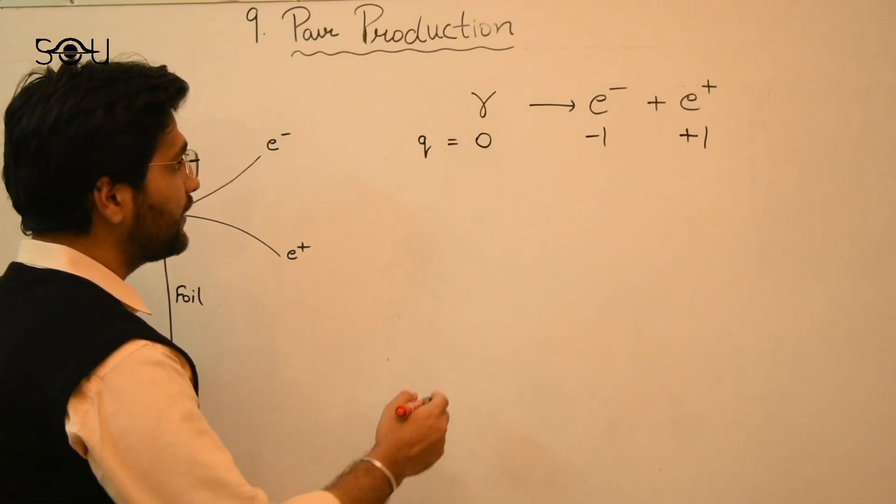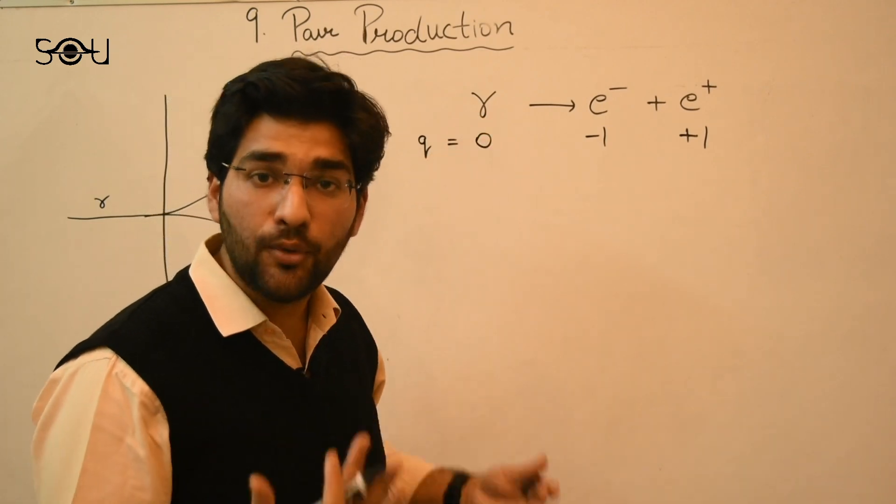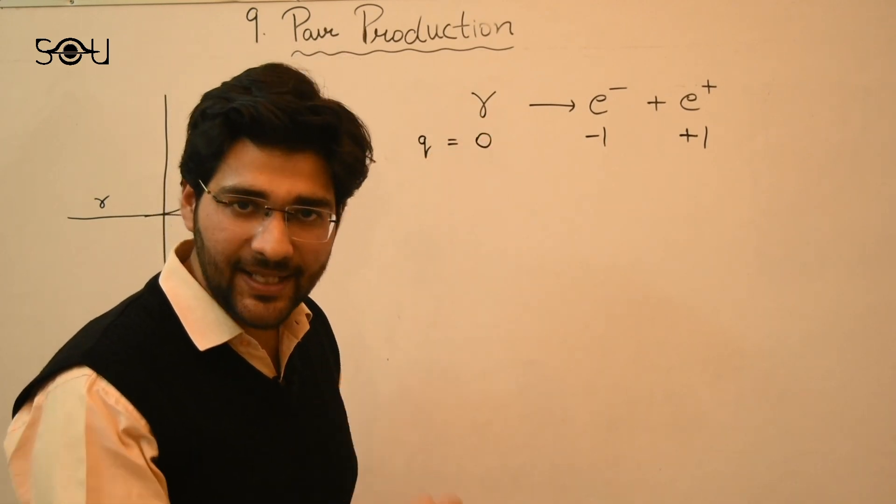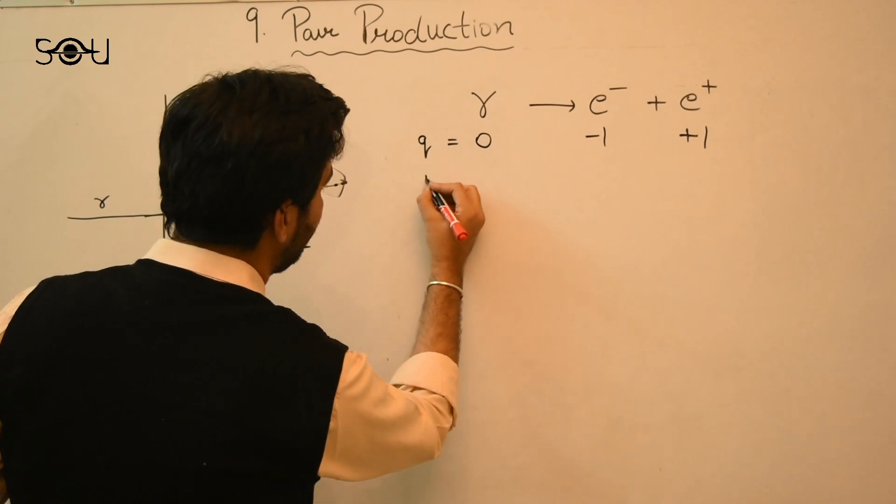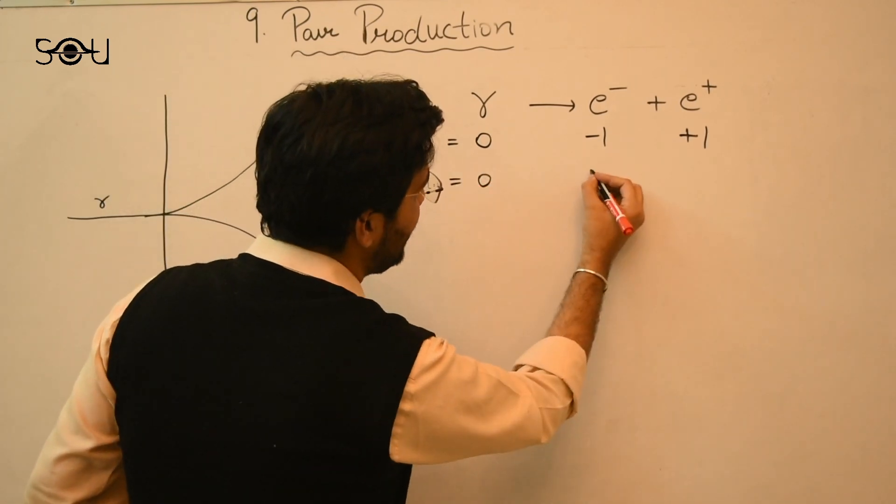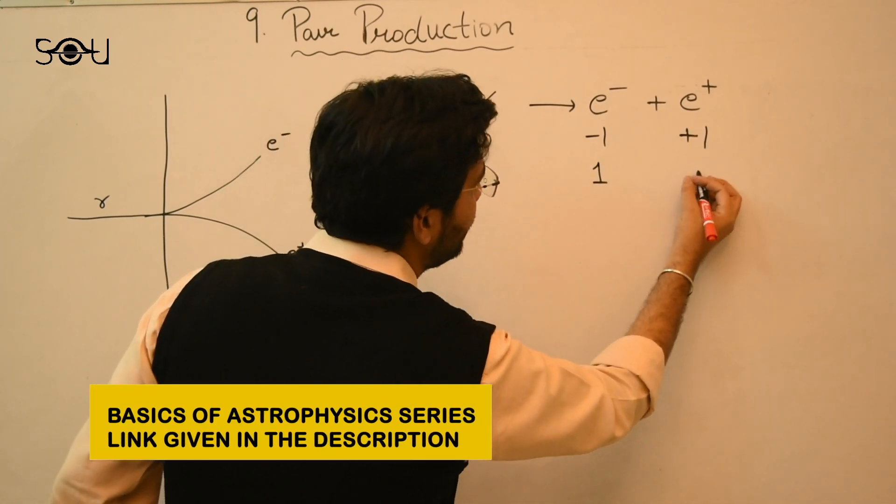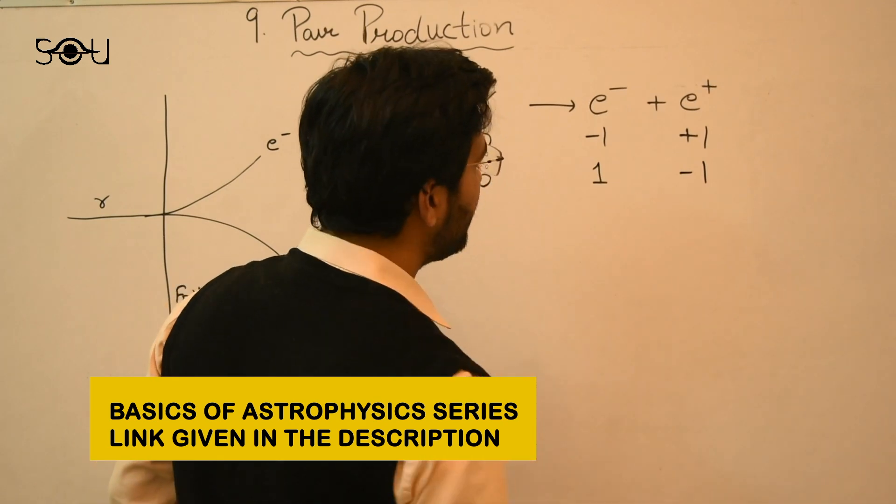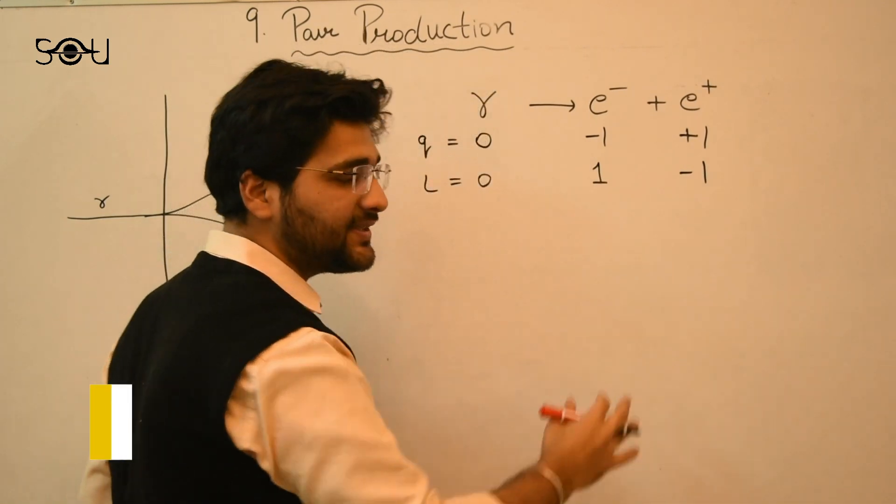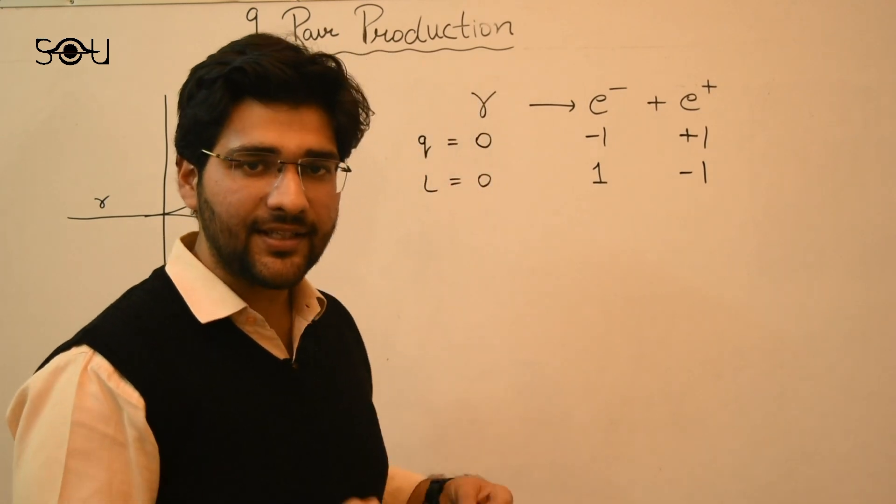Before the reaction, now since the photon is a boson, it's not a lepton, its lepton number is zero. So L equal to zero on the left hand side. Electron has lepton number one, and the antimatter counterparts of electron has lepton number minus one. So one minus one is again zero. So lepton number and the charge in this case are conserved.